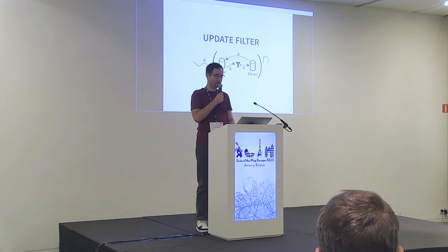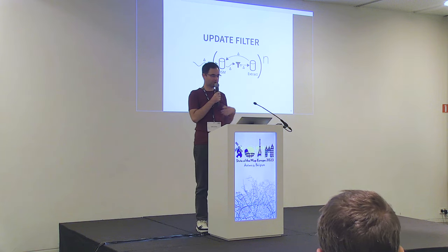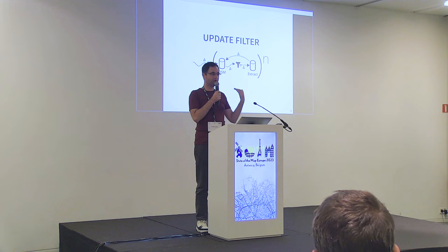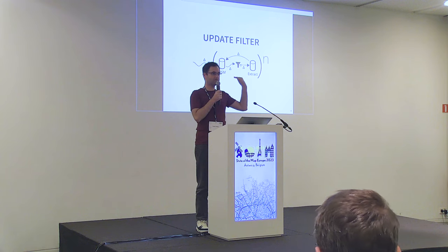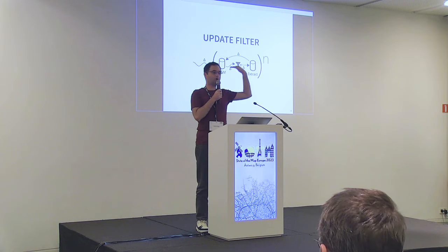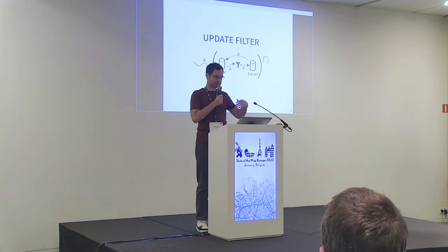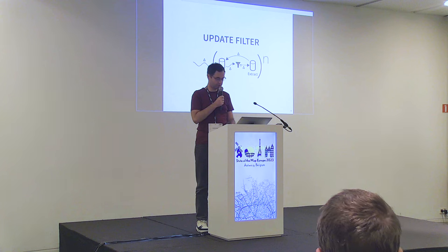The idea of the Clearance project is not to get random changesets, but to filter the input changes to only partially update the extract we have. When we see something wrong in our extract or in OpenStreetMap, we fix it in OpenStreetMap and let the update still be applied through the filter. This way, in our extract, we only increase quality iteration after iteration.